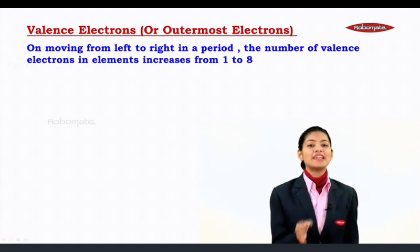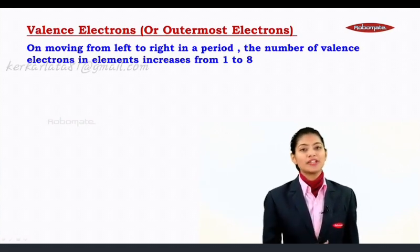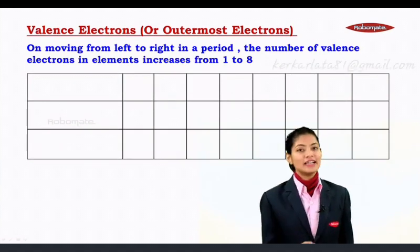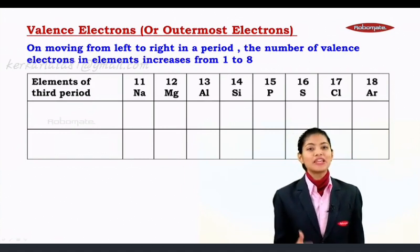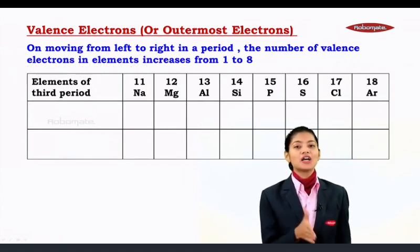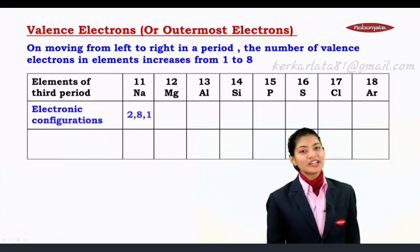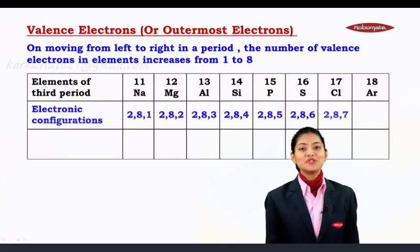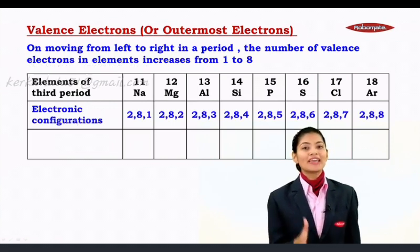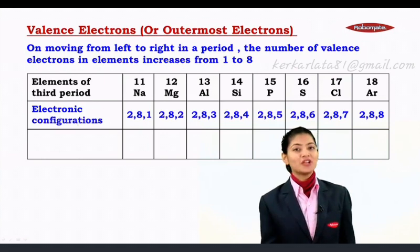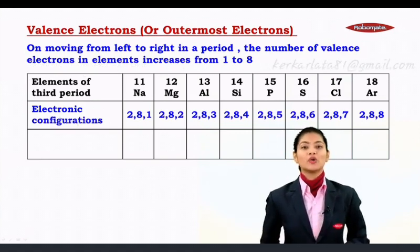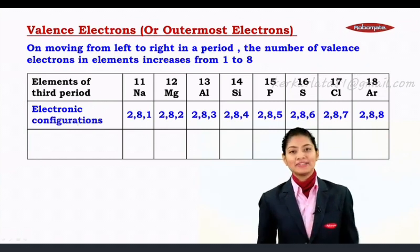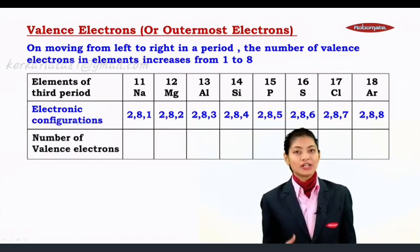In a period, the number of valence electrons in an element increases from 1 to 8. Let us consider the elements of the third period, which includes sodium, magnesium, aluminium, silicon, phosphorus, sulfur, chlorine, and finally argon, with their respective electronic configurations as 2,8,1 — 2,8,2 — 2,8,3 for aluminium — 2,8,4 for silicon — 2,8,5 for phosphorus — 2,8,6 for sulfur — and 2,8,7 for chlorine.